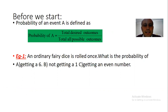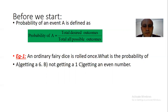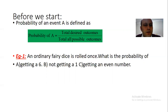Let's clarify with an example. An ordinary fair dice is rolled once. What's the probability of: A) getting a 6, B) not getting a 1, and C) getting an even number.